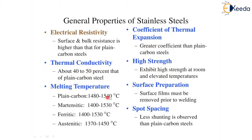Melting temperatures vary by type: martensitic 1480–1530°C, ferritic 1480–1530°C, and austenitic 1370–1450°C. Surface finish is very good compared to other steels; however, surface films must be removed prior to welding. Less magnetic shunting is observed in stainless steel compared to plain carbon steel.